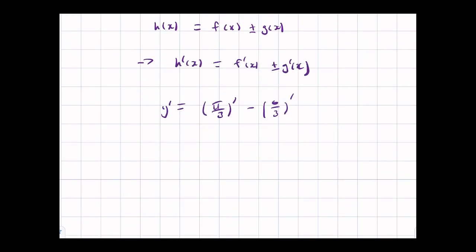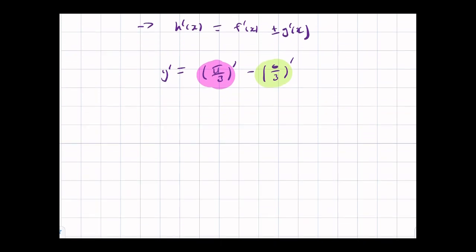The constant function pi over 3, and then this linear function of theta, negative theta over 3. And what is the derivative of a constant? Well, it's just 0. The derivative is the rate of change. Constants don't change. They remain constant.